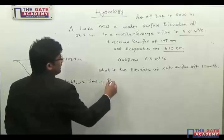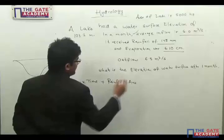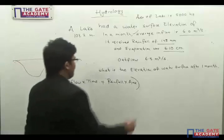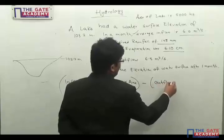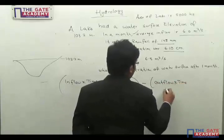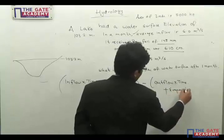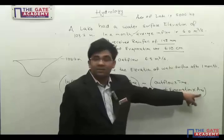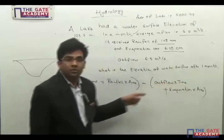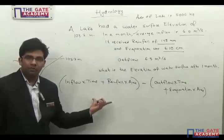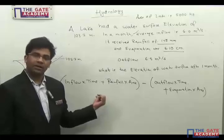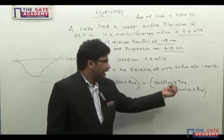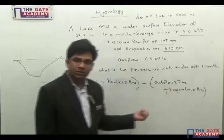How much water goes into the system? Inflow multiplied by time gives us the volume, plus rainfall multiplied by area also gives us the volume. The total inflow minus outflow multiplied by time, plus evaporation multiplied by area, gives the change in storage. Depth multiplied by area gives volume, so this amount represents the volume going in versus out.